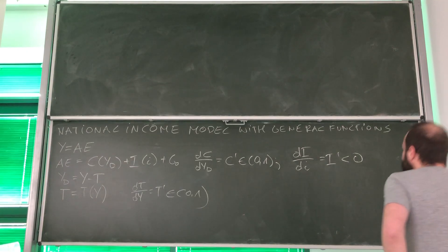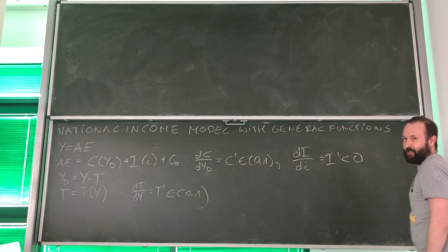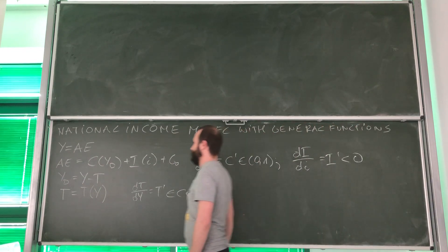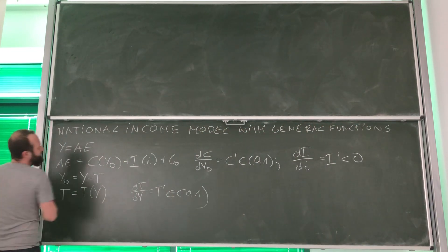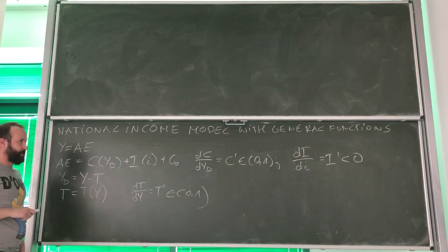Hi. The second economic application of the implicit function rule is going to be the national income model with general functions.